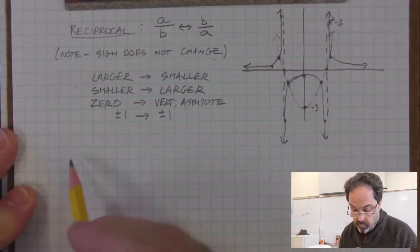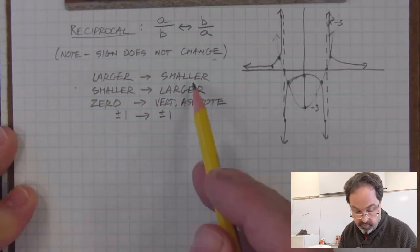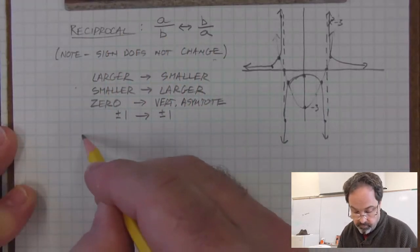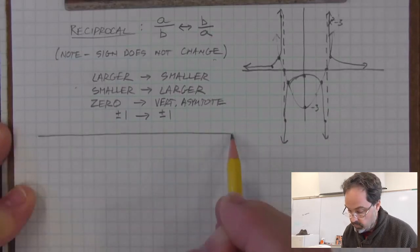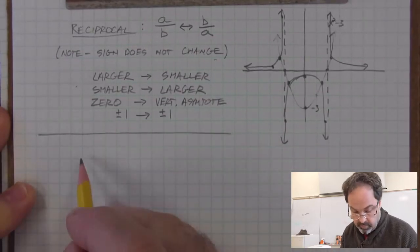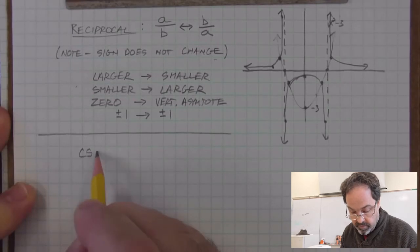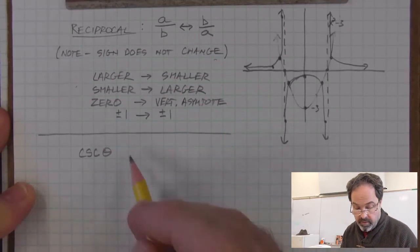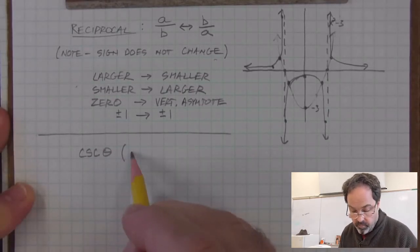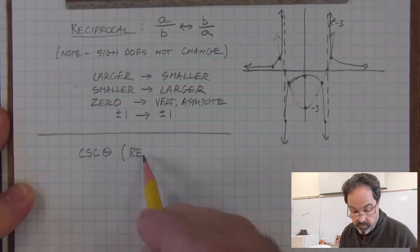Let's do one more guided by this concept and graph cosecant of theta. Theta will be the horizontal variable. So cosecant, we'll remind ourselves, is a reciprocal of sine.